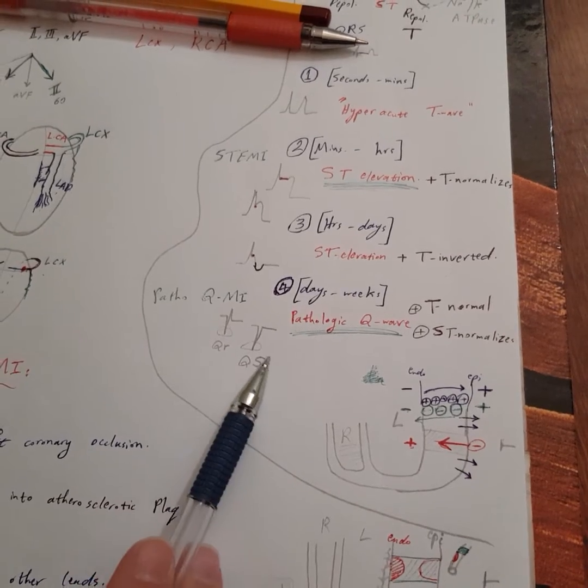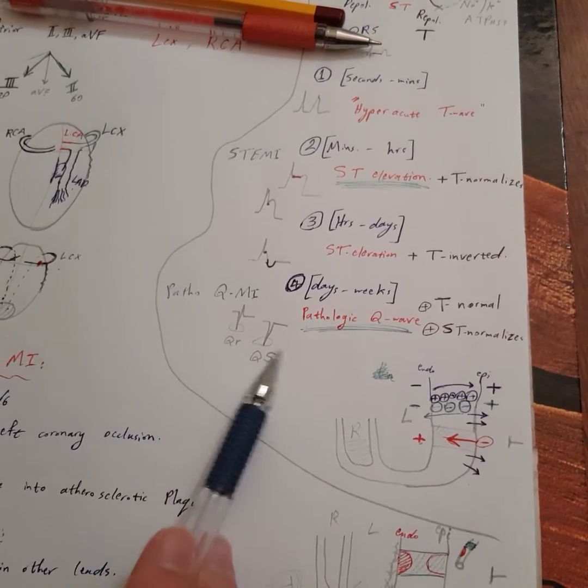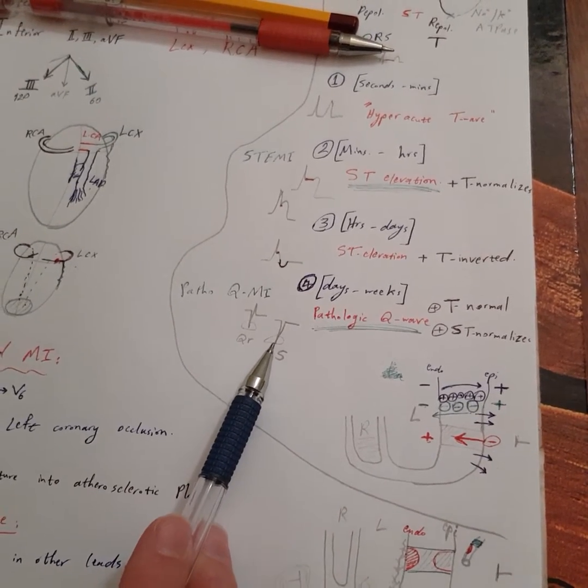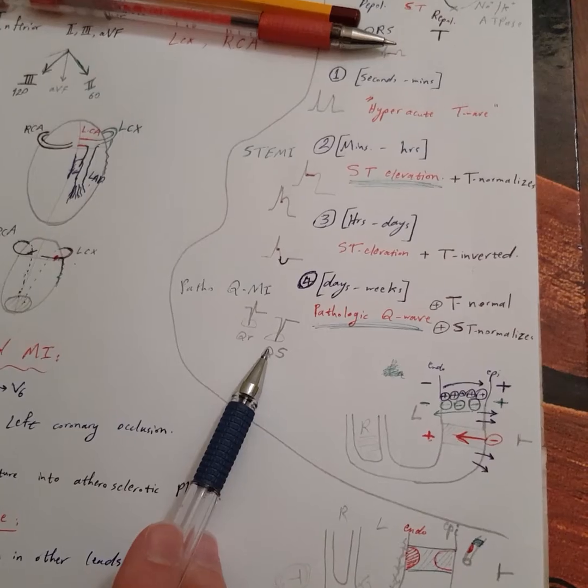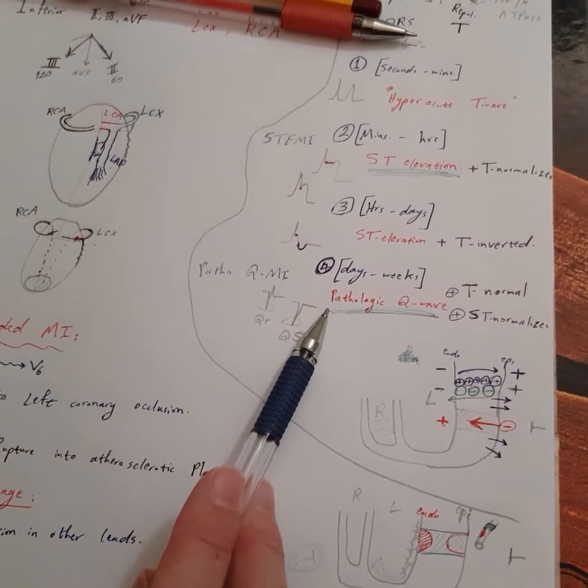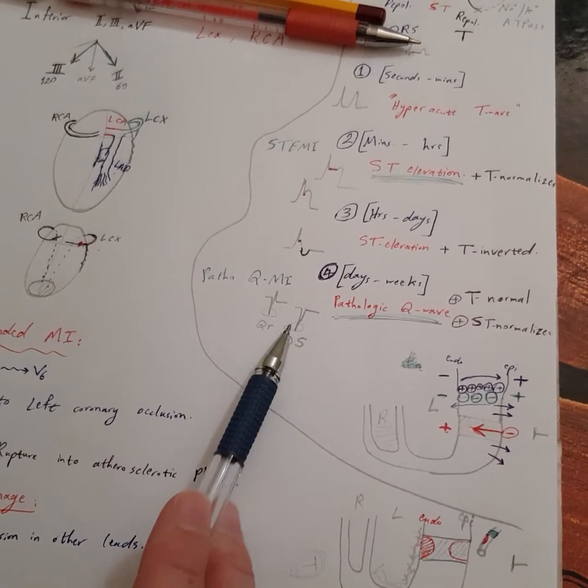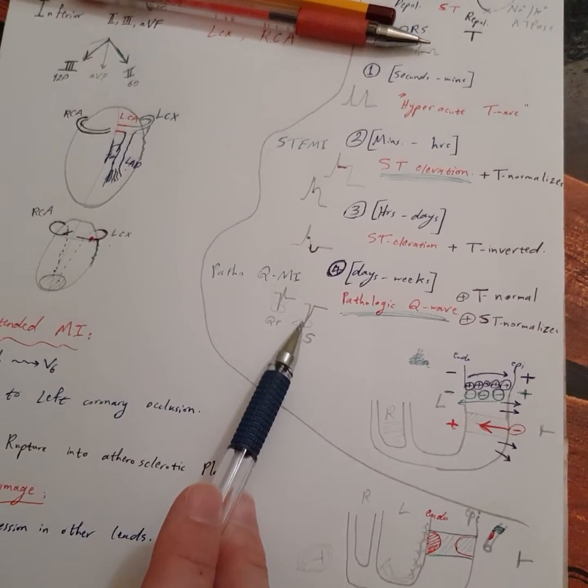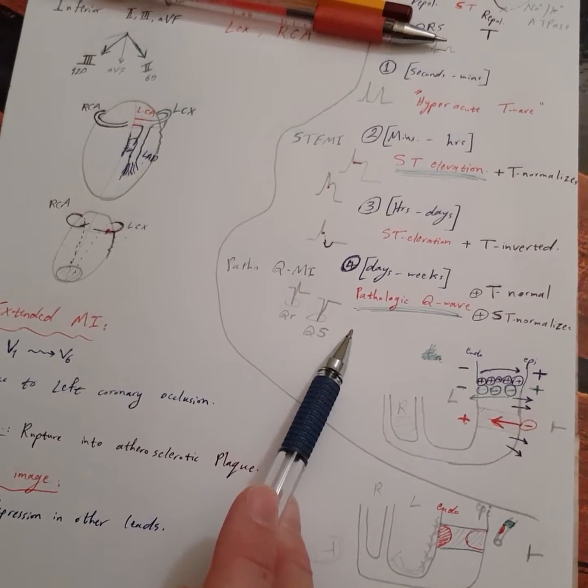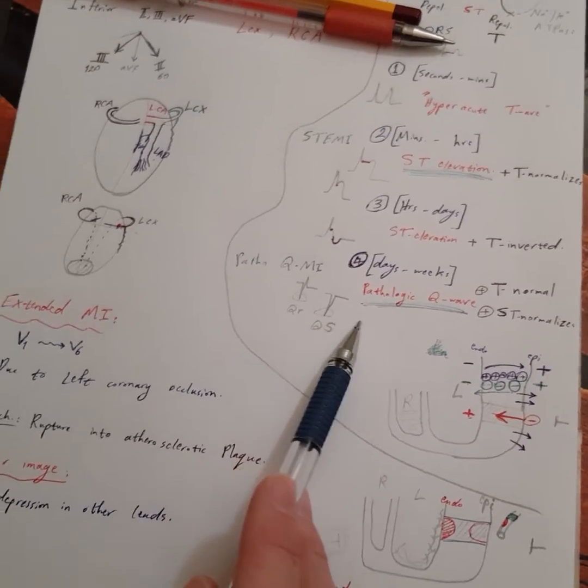this QS complex from the one we see in V1 when it's left bundle branch block? The thing is, in bundle branch block, the QRS is wide and comes with secondary ST-T changes. But this one, the QRS is narrow and you only see this. When you see it in V1, you'll probably see it in V2, meaning it's septal.